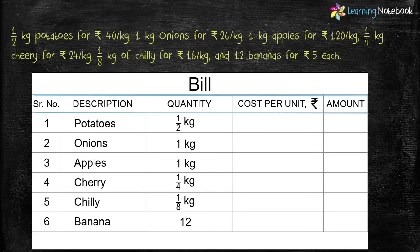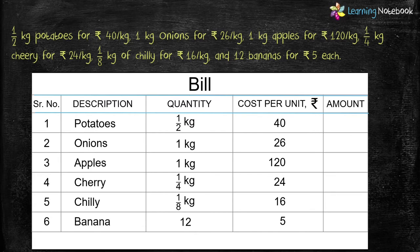Next let's write the cost per unit for the items purchased. Cost of potatoes is rupees 40 per kg, cost of onions is rupees 26 per kg, for apples the cost is rupees 120 per kg, for cherries it is rupees 24 per kg, for chilies it is rupees 16 per kg, and for bananas it is rupees 5 per piece.